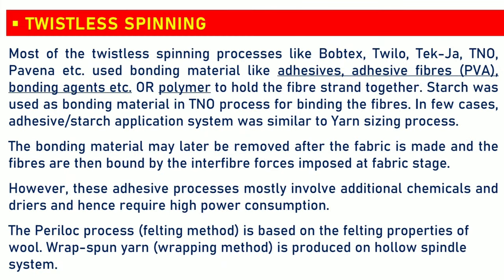Here we have a study of different twistless spinning processes in brief. Most of the twistless spinning processes — like Bobtex, Twilo, Texa, TNO, Pavena, etc. — use bonding material like adhesives, adhesive fibers, bonding agents, etc., or polymer to hold the fiber strand together. Starch was used as bonding material in the TNO process for binding the fibers.